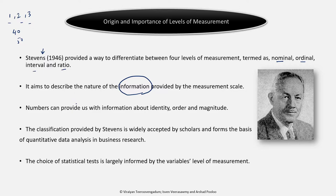Depending on the amount of information that we are able to capture, we classify our scale as being nominal, ordinal, interval, or ratio. The types of information we seek to capture are identity, order, and magnitude. Remember that: identity, order, and magnitude. The classification is widely accepted, widely used, and it informs the choice of statistical tests.